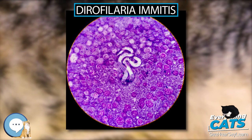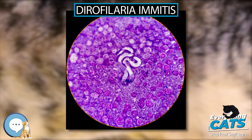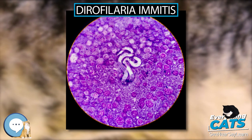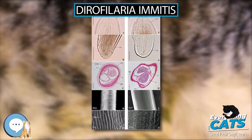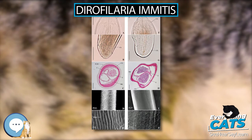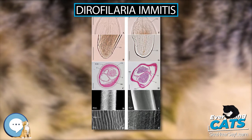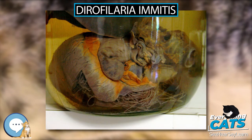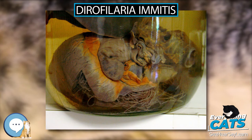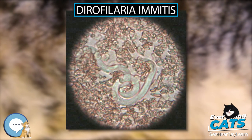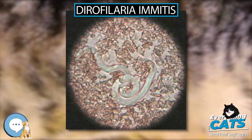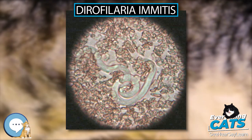X-rays are used to evaluate the severity of heartworm infection and develop a prognosis for the animal. Typically, the changes observed include enlargement of the main pulmonary artery, the right side of the heart, and the pulmonary arteries in the lobes of the lung. Inflammation of the lung tissue is also often observed.